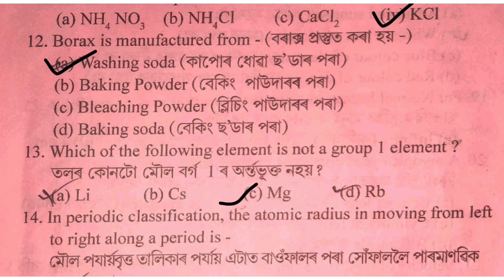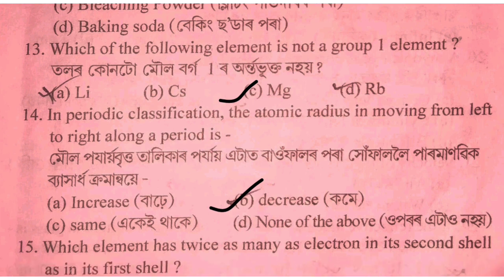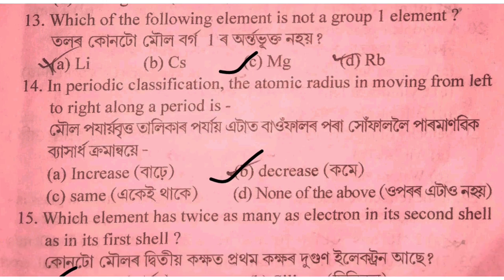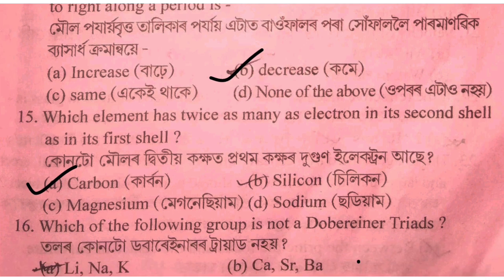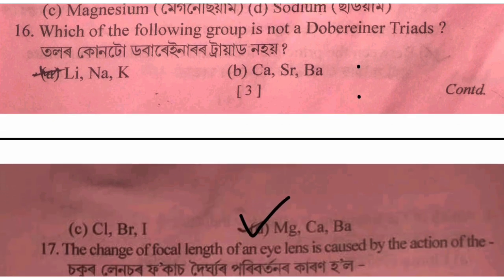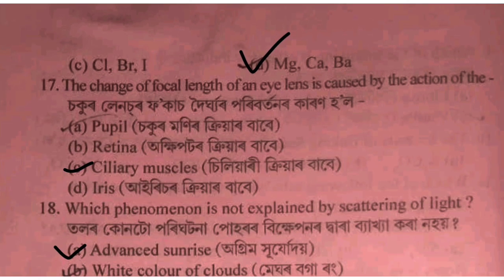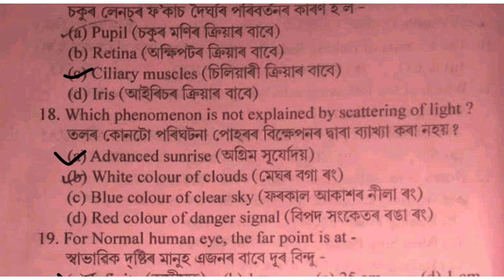For the next question, looking at the options — carbon is option A. Lithium, sodium, and potassium are in group 1. The ciliary muscles are involved in focusing. The correct option is B.